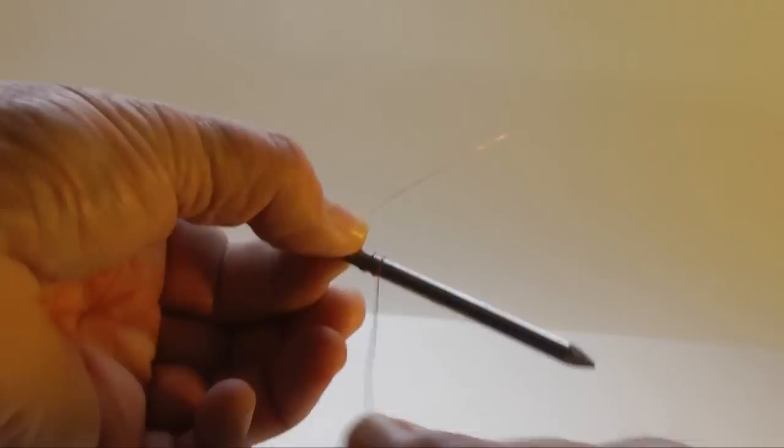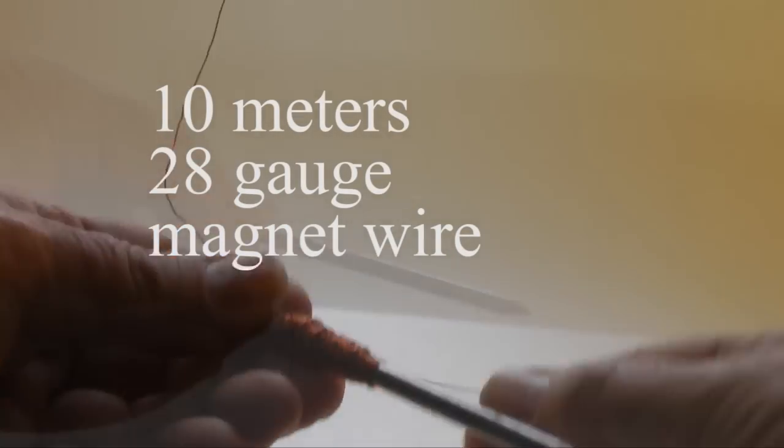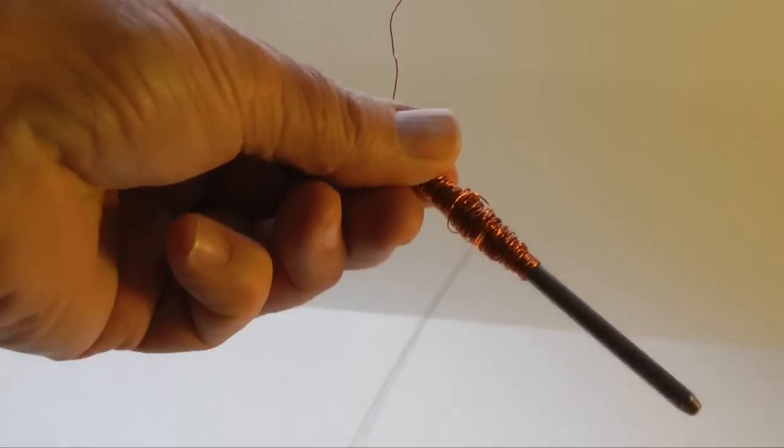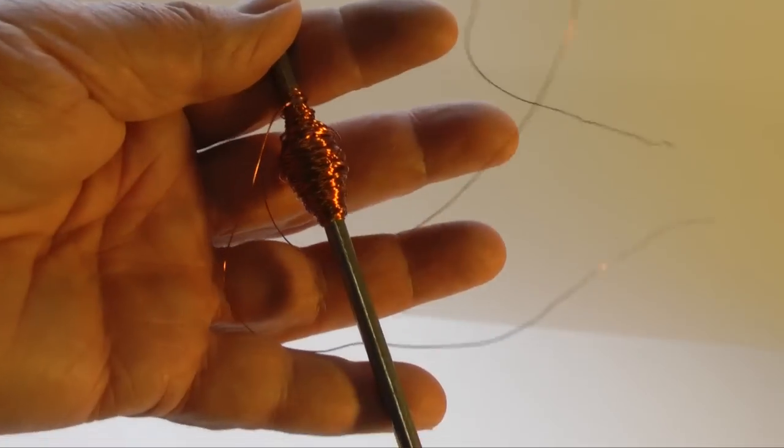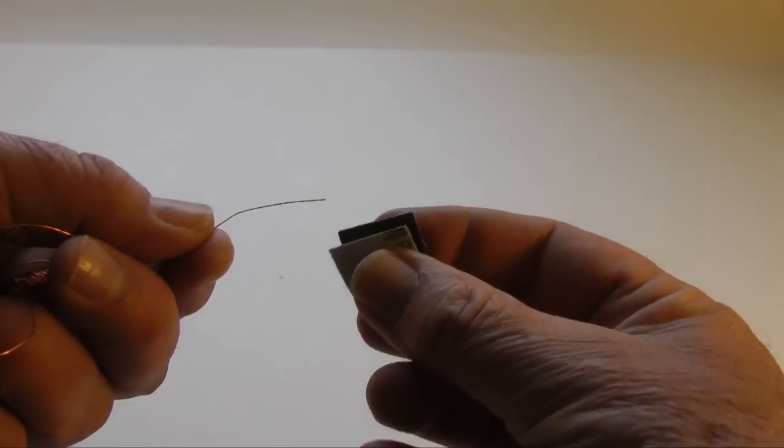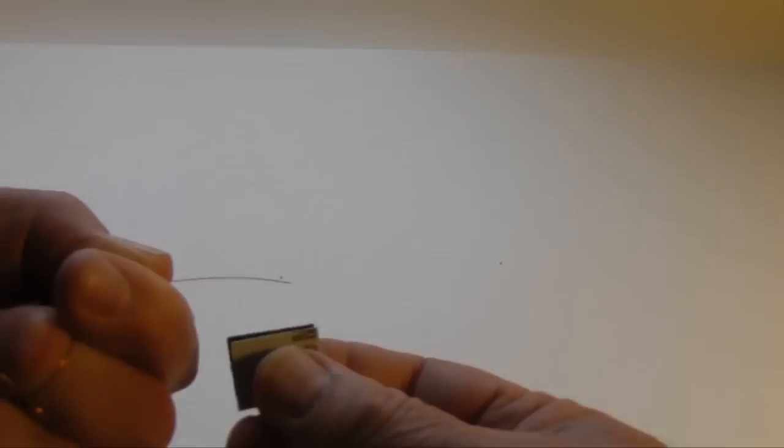The first step is to create an electromagnet. This is accomplished by wrapping 10 meters of 28 gauge magnet wire around an iron nail. It is important that the wrapping is all done in the same direction. Leave both ends of the wire exposed. Magnet wire is insulated with a thin layer of enamel. Use sandpaper to remove the insulation from each end of the wire. This exposes the copper metal.